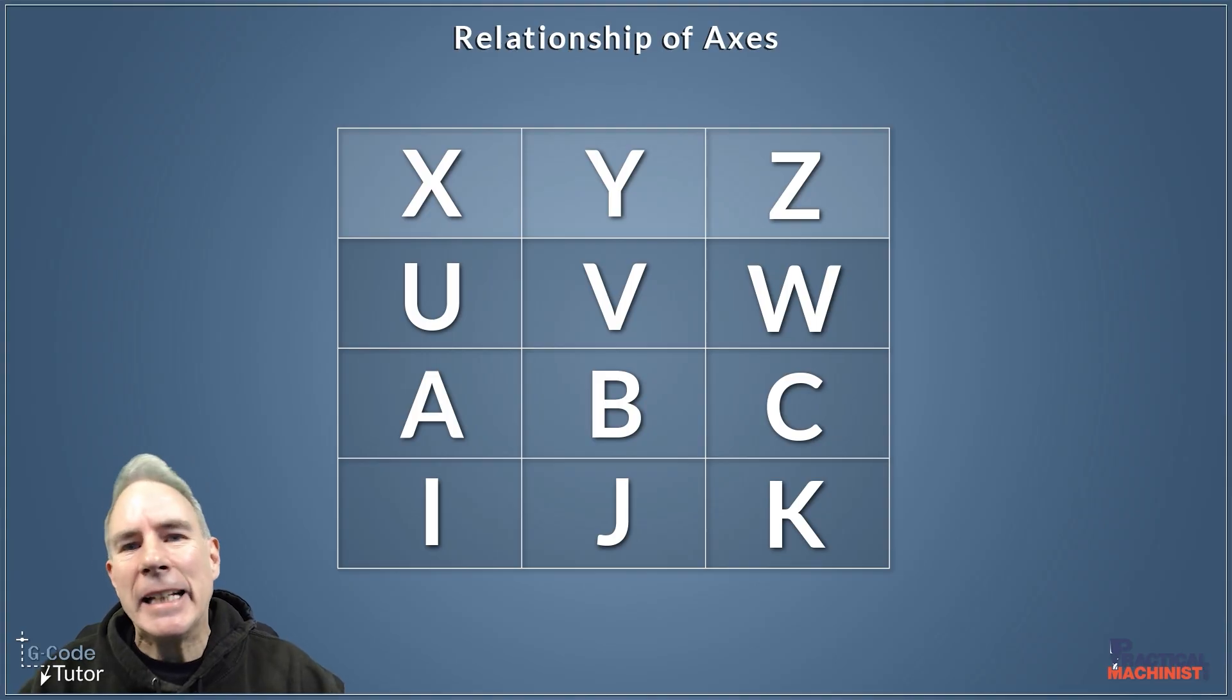Okay, so here's a graphical representation of the axes that I'm going to talk about during this video. Now you might find if you have a 12 axes machine, you might have more axes than this. So we're just talking about the X, Y and Z and the different relationships to different axes from those.